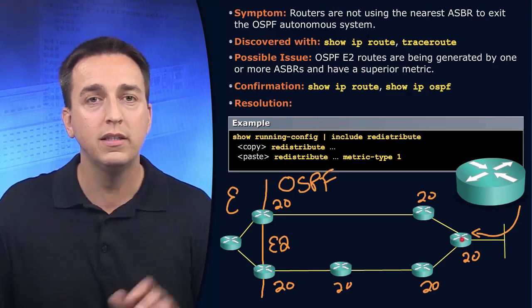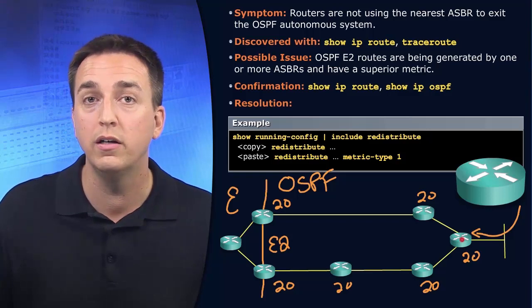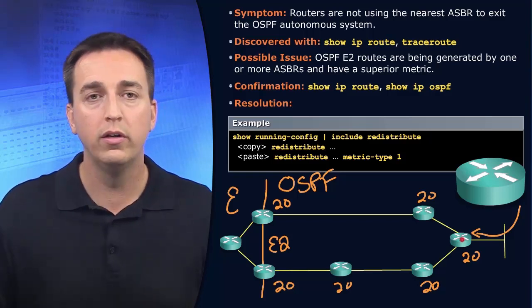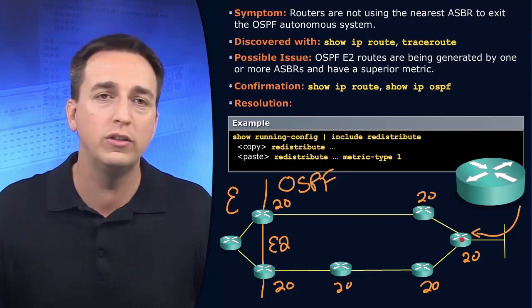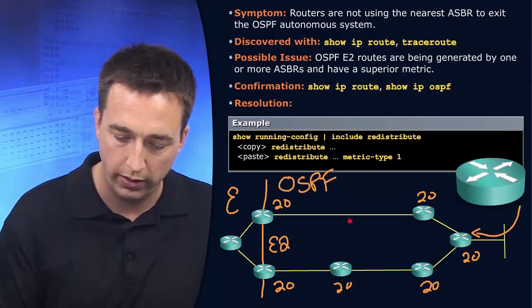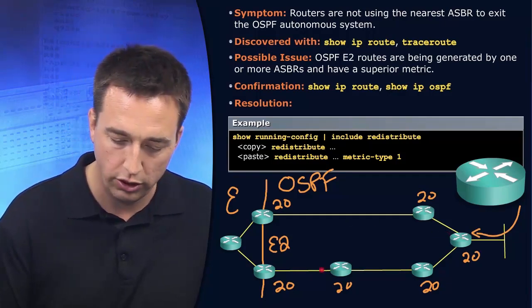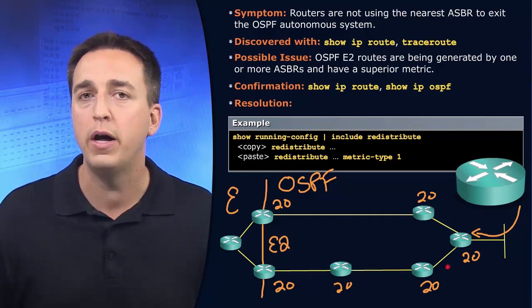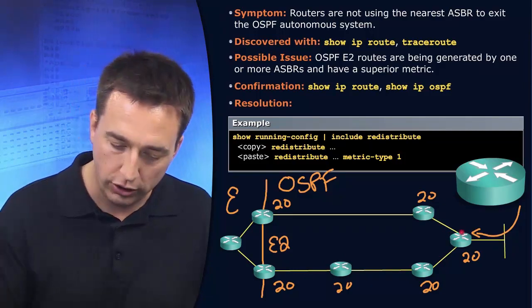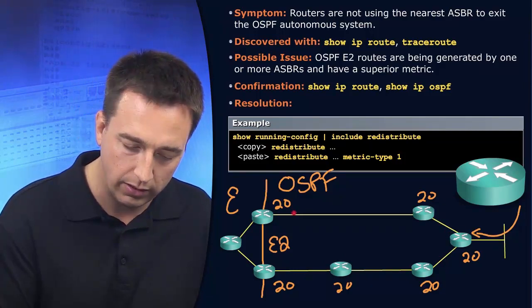Simply because the paths to the ASBR are no longer equal based on cost. If we're using all gigabit links here, then the cost is one and one, so two, and the cost is one, two, three along the bottom path. So then this router would choose this path every single time.